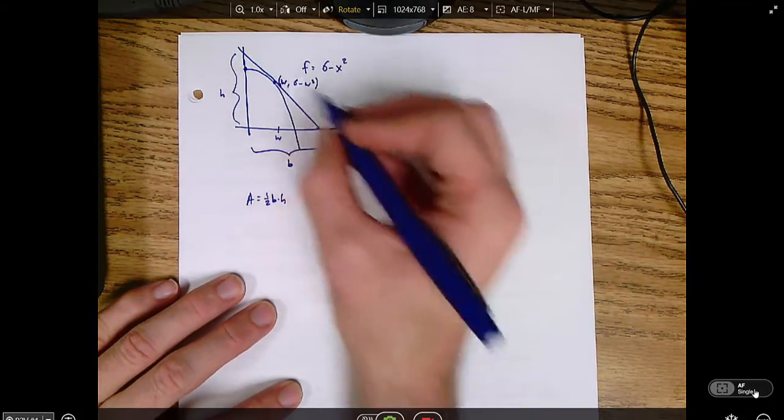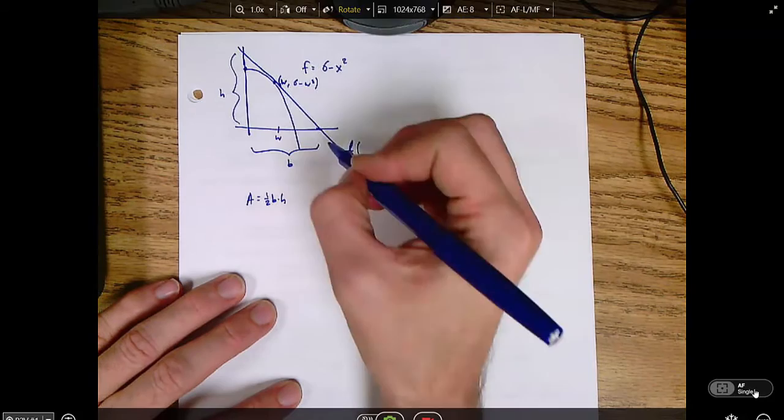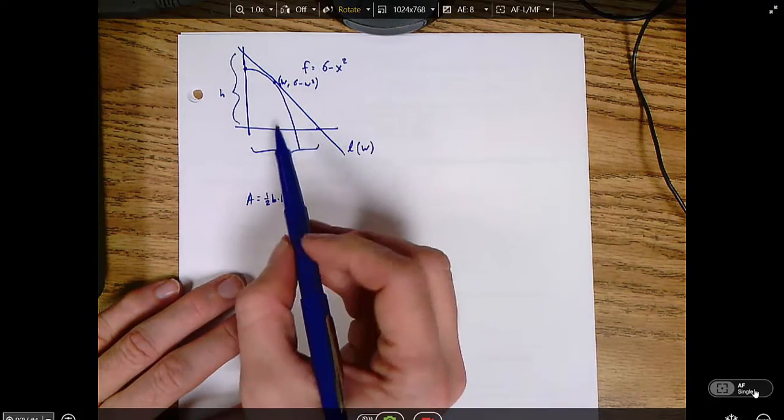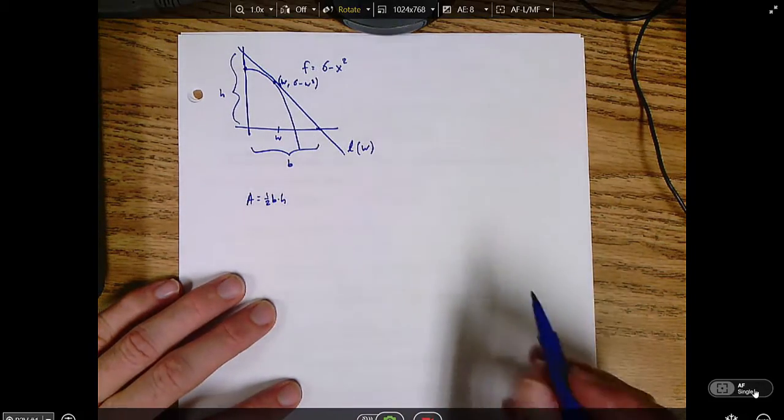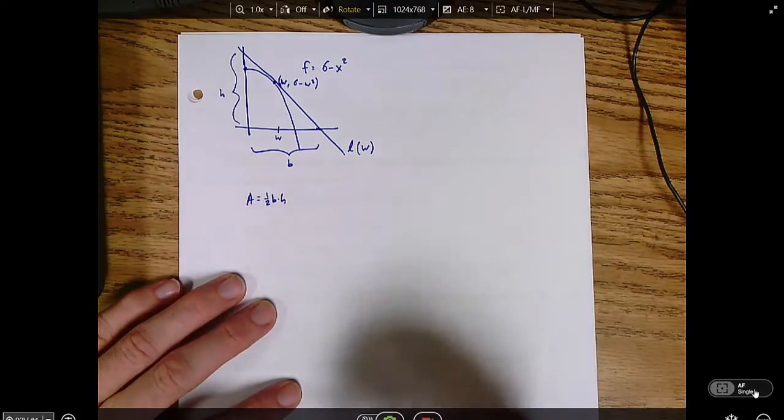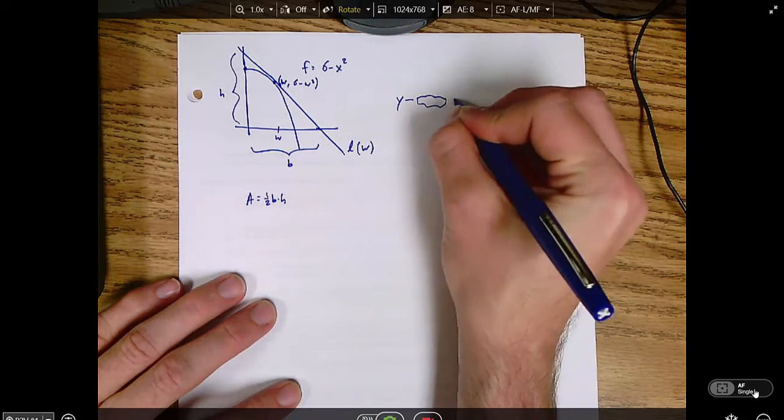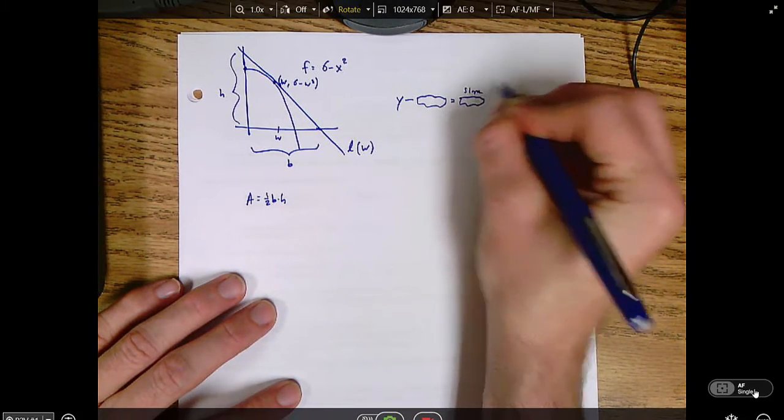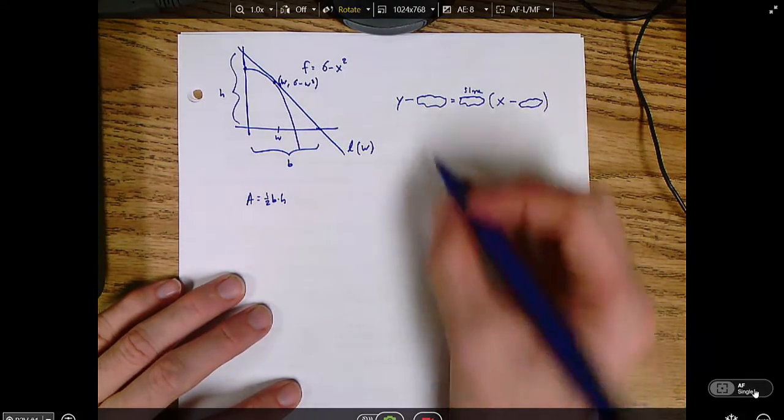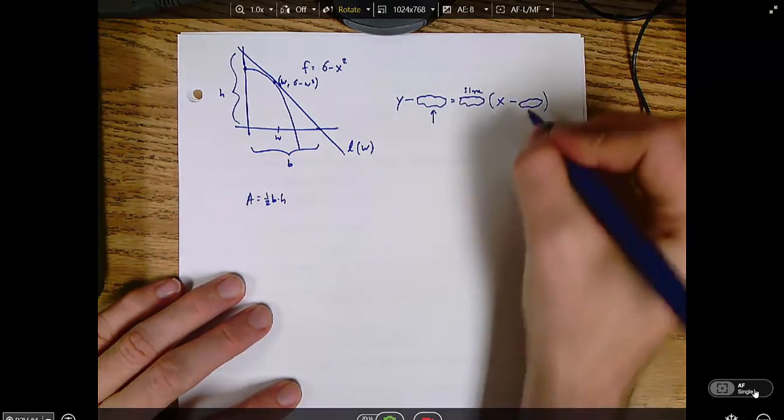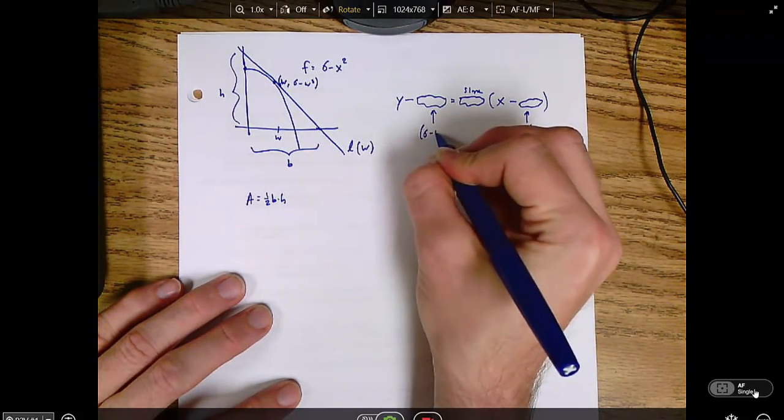Because the triangle is formed by this tangent line, it's probably a good idea to write the equation for the tangent line. And that tangent line is a function of w, because if we move w around, that's what's going to move the line around. So let's start out by writing our equation for the tangent line. We can use point-slope form, so y minus some y coordinate equals slope times x minus some x coordinate.